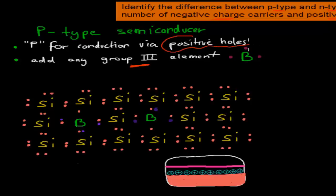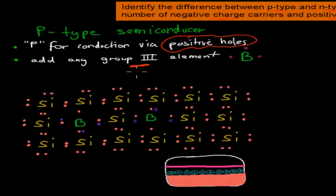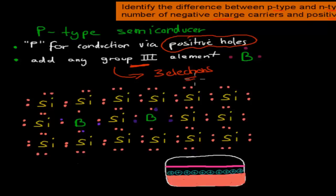You can already guess that your P-type semiconductors will have more positive holes than your N-type semiconductors, as one of their main conduction ways is via these extra positive holes. The reason why is because if we add any group 3 element into the structure — the lattice of a semiconductor — these group 3 elements have three valence electrons. So you can see this would be the boron; it has one, two, three valence electrons, and that would be for any group 3 element.